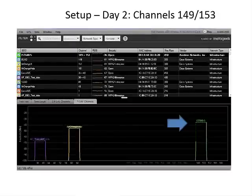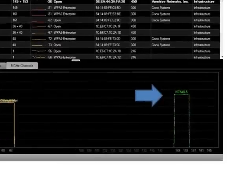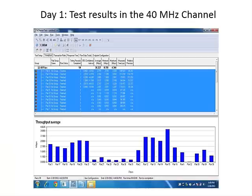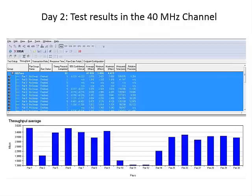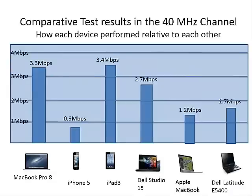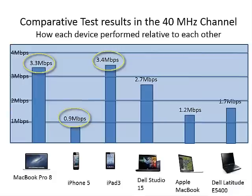On Day 2, we had to jump to channels 149 and 153 due to interference on channels 36 and 40. Here are the Day 1 test results in the 40 MHz channel, and here are the Day 2 test results. In the comparative results for the 40 MHz channel, the iPad 3 responded with the highest average throughput of 3.4 Mbps. The MacBook Pro 8 was close behind with an average throughput of 3.3 Mbps. The iPhone 5 responded with the lowest average throughput of just 0.9 Mbps.